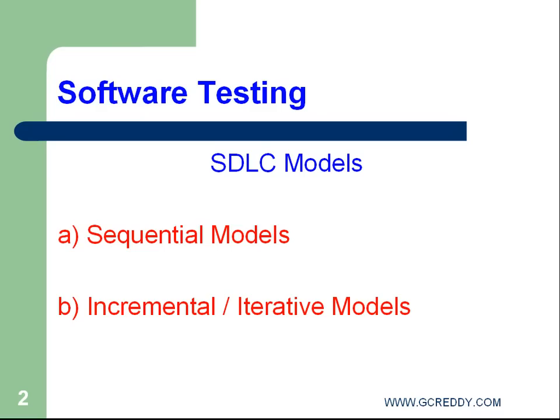In the industry we have many models, which we can segregate into two categories. First, sequential models. Next, incremental or iterative models. Sequential models mean stage by stage — stage by stage development happens. After completion of each stage, the next stage begins. One stage's output is the input for the next stage.